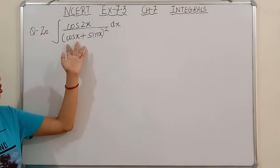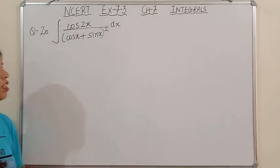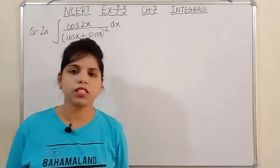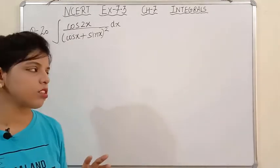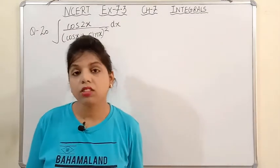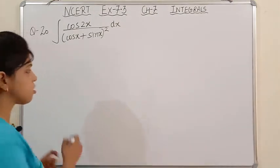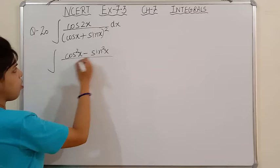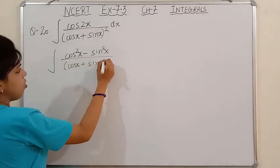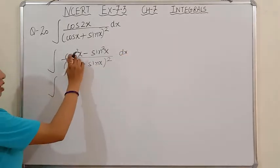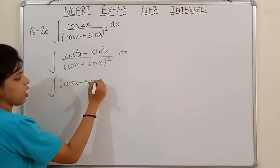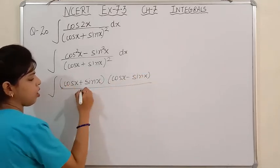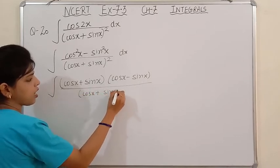Question number 20: integration of cos 2x upon (cos x + sin x)² dx. Here, for cos 2x, we have to think about which formula to use. Since the denominator has both cos and sin, we use the formula of cos 2x that involves both: cos 2x = cos²x - sin²x upon (cos x + sin x)². In the numerator this is in the form of a² - b², which equals (a+b)(a-b).